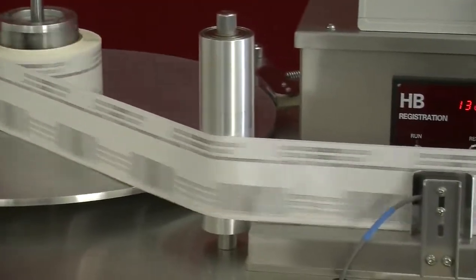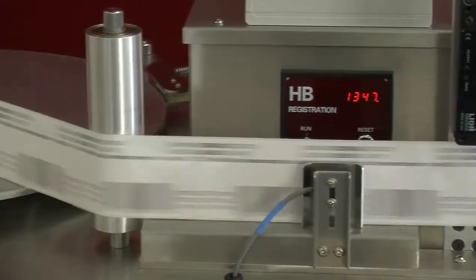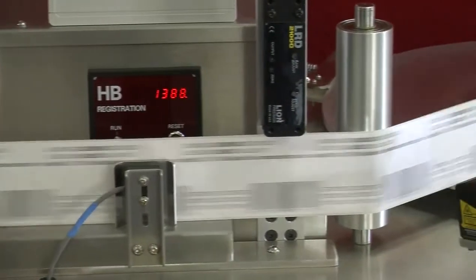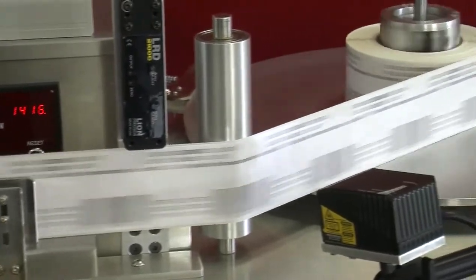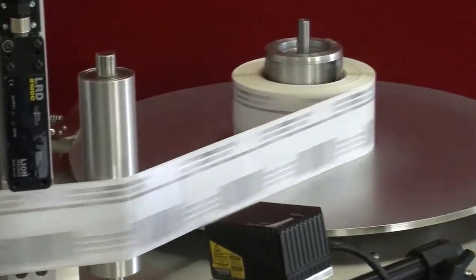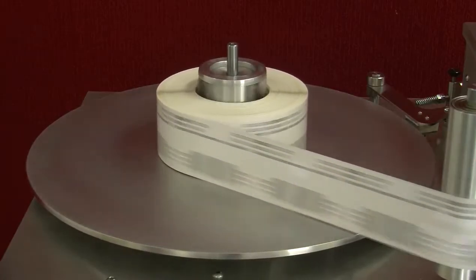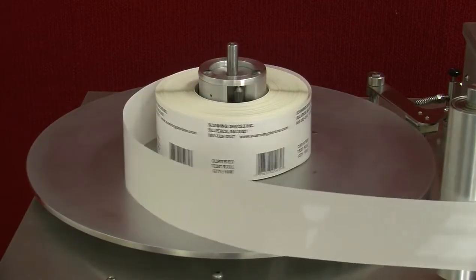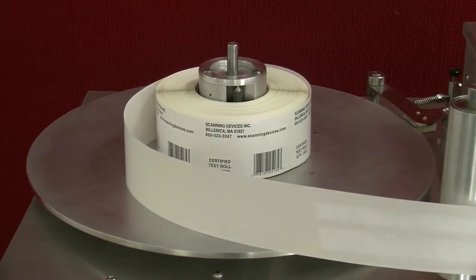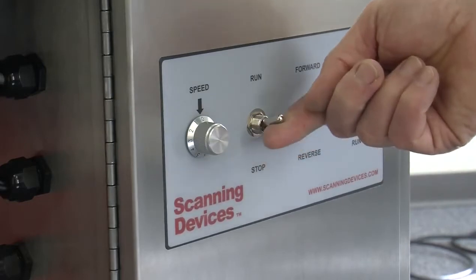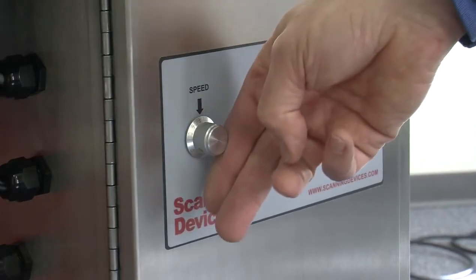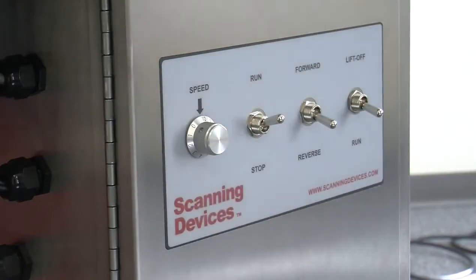Proper tension is maintained throughout the web inspection process by tension control arms that keep the web tight as it unwinds from the supply reel to the take-up reel. When there are no more labels to count, the motors are halted and the count can be recorded. To rewind the roll to its original position, just adjust the selection switch and reverse the process.